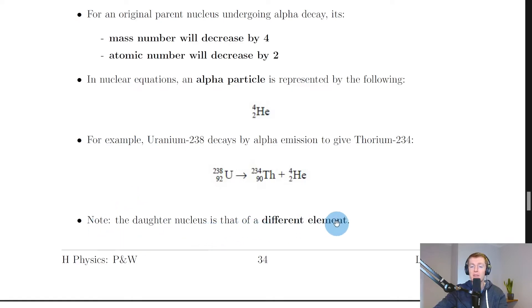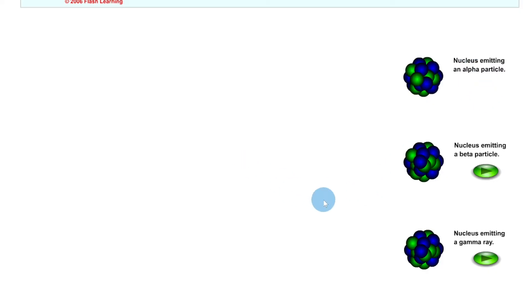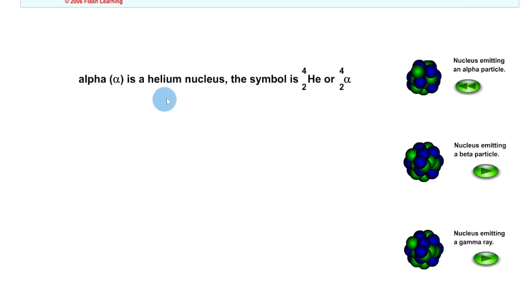Note that the daughter nucleus is that of a different element — here our parent nucleus is uranium and our daughter nucleus is thorium. We call it the daughter nucleus because it's the one being produced in the reaction, and there might sometimes be more than one daughter nucleus. A quick simulation shows the nucleus emitting an alpha particle — alpha is a helium nucleus, with the symbol helium-4-2.